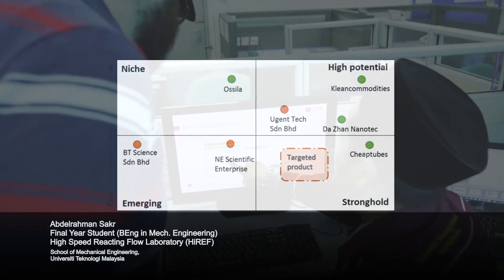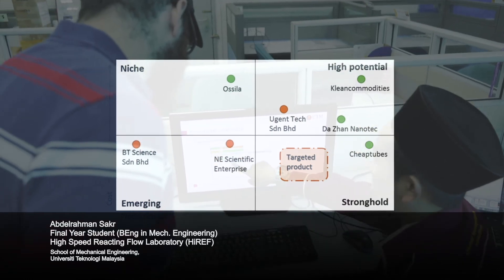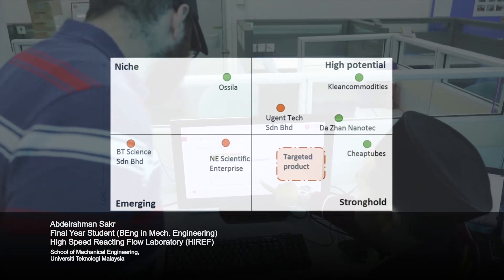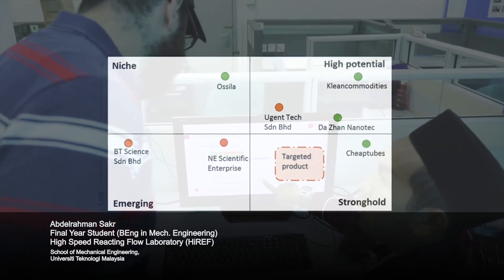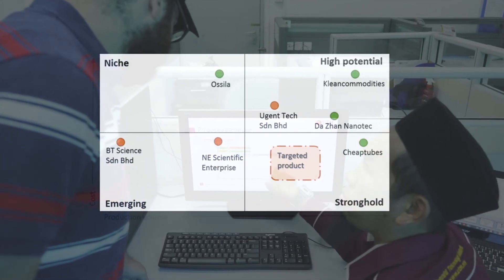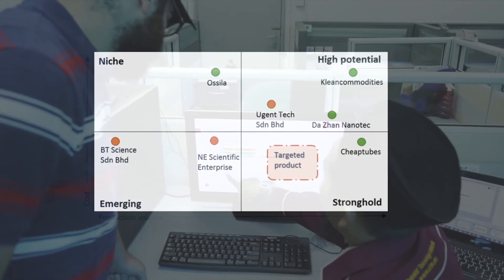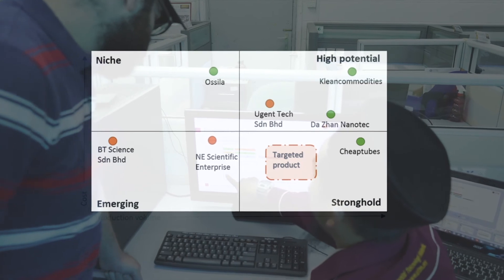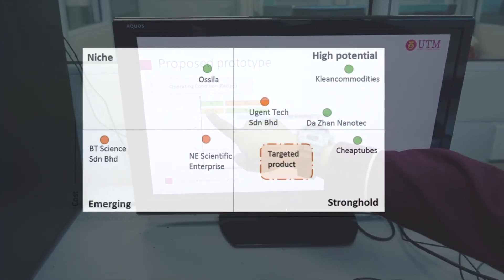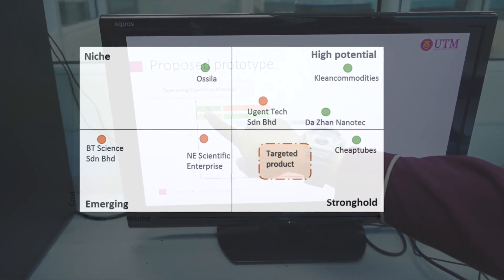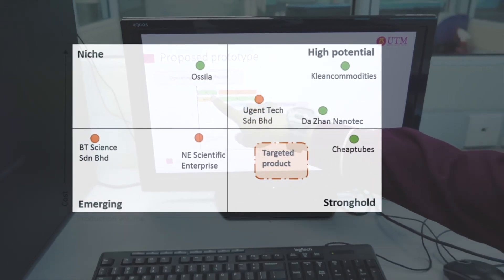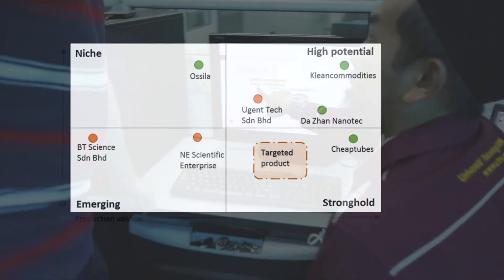We are quite confident to penetrate the local market since there is no large-scale producer of CNT in the country. We expect to position ourselves as a manufacturer of low-cost CNT with large production volume. Local suppliers like NE Scientific and BT Science are low-volume suppliers, while high-volume supply is mostly dominated by overseas manufacturers.